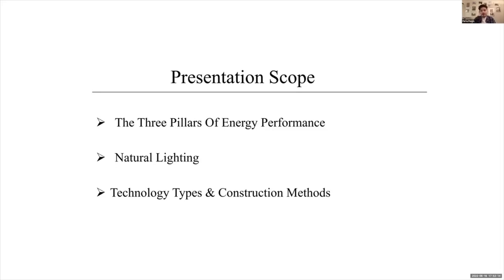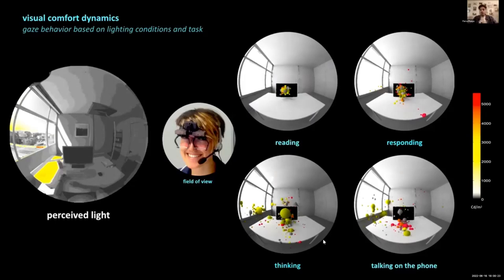And at the end, we have some technical resources for calculating all aspects of the canopies, awnings, and so on. At the right side, we have four different circles and it shows reading, responding, thinking, and talking on the phone. What are these small red or yellow circles standing for?